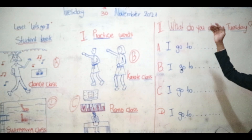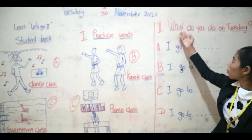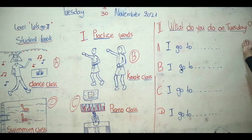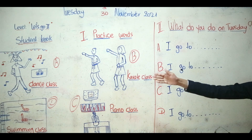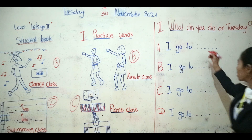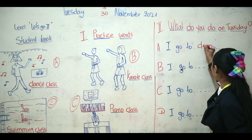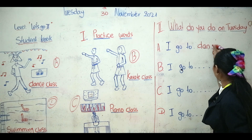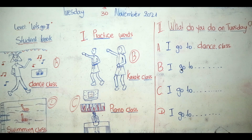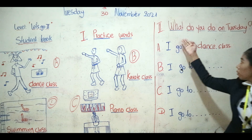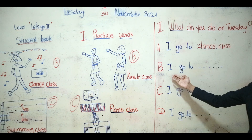Now I want you to answer a question. Number two: what do you do on Tuesday? Look at picture A — I go to dance class. Can everyone spell dance class? D-A-N-C-E, class, C-L-A-S-S. Great job! For picture B, what do you do on Tuesday? I go to karate class.